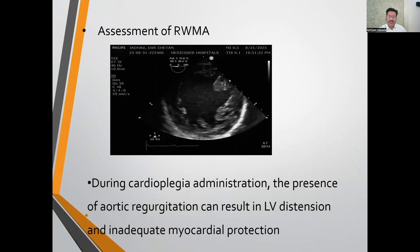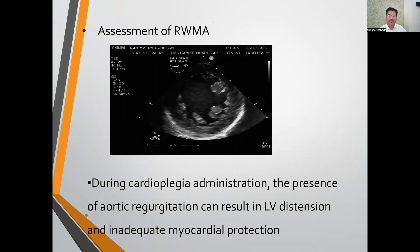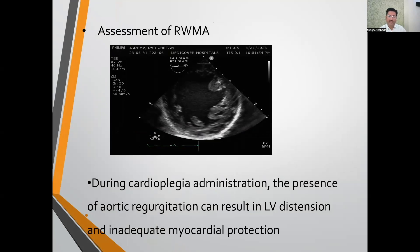The luxury of directly seeing the heart is gone in MICS, so we rely on TEE for assessment of regional wall motion abnormalities. This transgastric mid-papillary view is used for assessment of wall motion abnormalities in CABG cases — preoperatively, intraoperatively, and postoperatively. Recently, we had a patient posted for MICS CABG with a preoperative echo showing EF of around 45%, but after induction on TEE we found EF was only 25%, so the MICS plan was changed to conventional cardiac surgery.